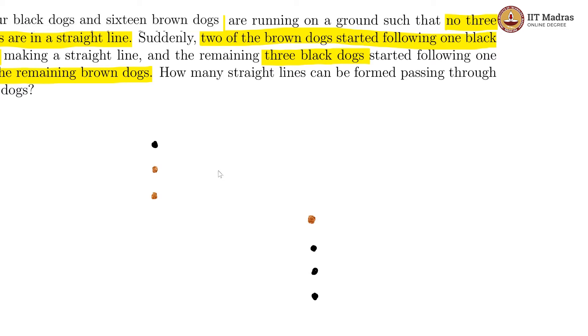So these 4 are also on a straight line. And then they are asking how many straight lines can be found passing through the dogs.